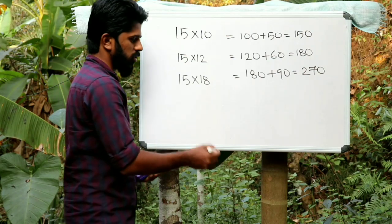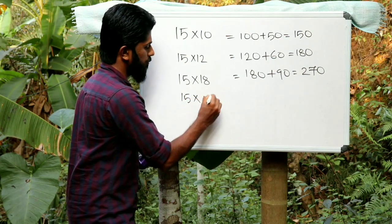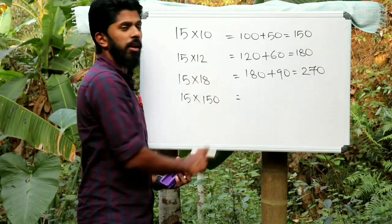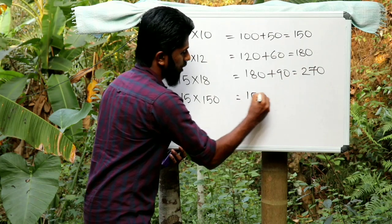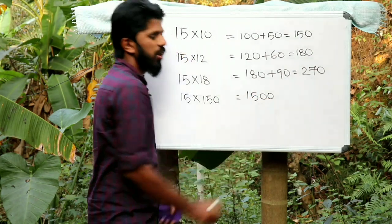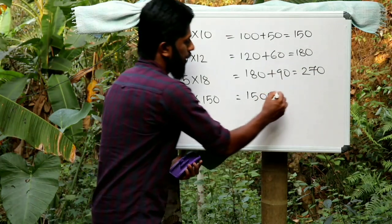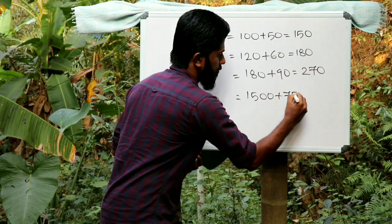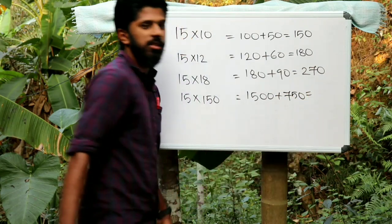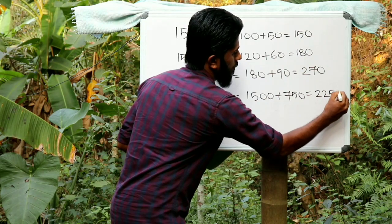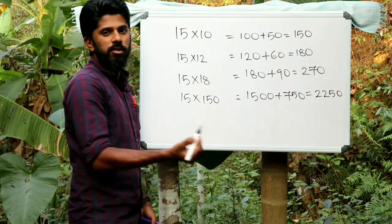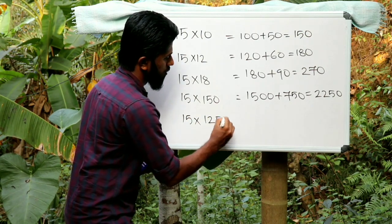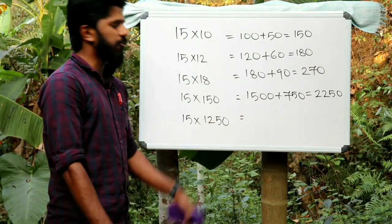Now 15 times 150. One fifty — at the ones place, it is 0, plus 1,500 plus 750, therefore the answer is 2,250.